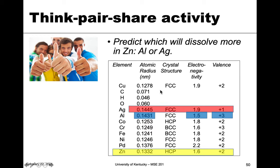Now we compare those values with aluminum and silver, which I've highlighted here. Looking at the first criteria — radii — both aluminum and silver are larger than zinc and are actually pretty similar to each other. But if we comparatively want to know which one is closer to zinc, then aluminum would match that criteria better. So that was the first Hume-Rothery rule: size difference.